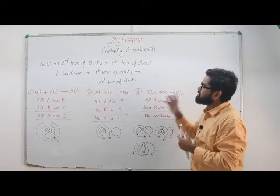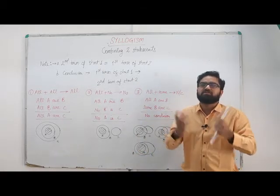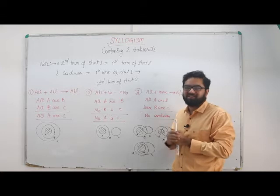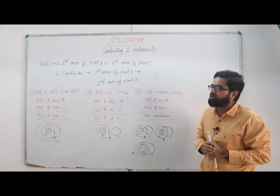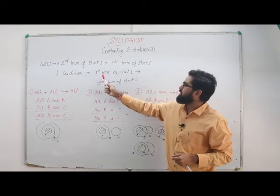Now since through common statement we are finding the conclusion, that statement or that term will be cancelled out, that will be eliminated. So finally we have conclusion from A to C. In conclusion we have first term of statement 1 and second term of statement 2.